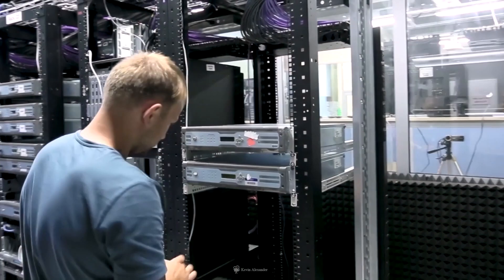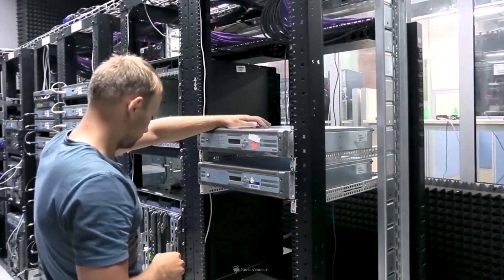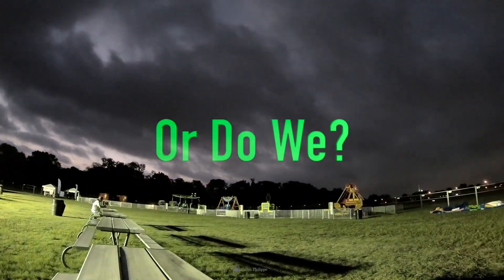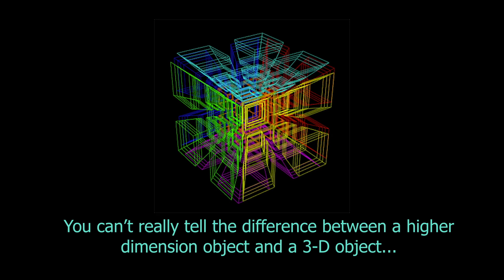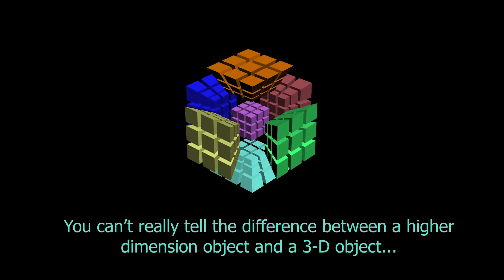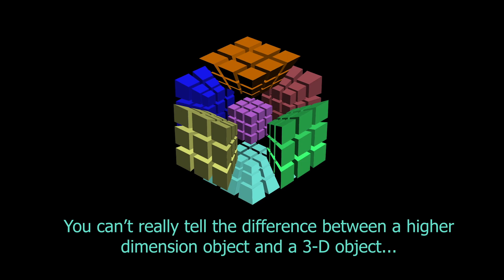We generally interact with all objects in three-dimensional space. Or do we? Even if we can see something which has more than three dimensions, our brain will perceive it as a three-dimensional object.